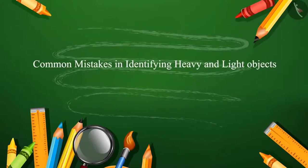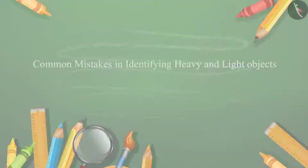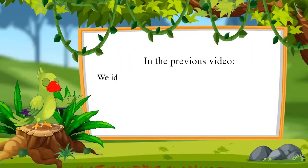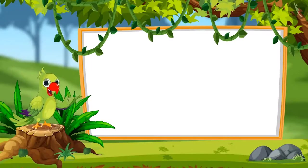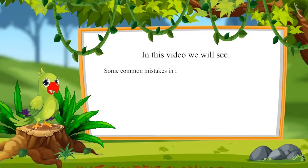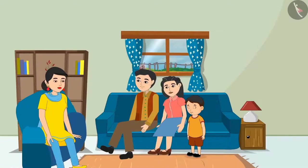Common mistakes in identifying heavy and light objects. Today, Chotu's uncle and aunt have come to his house. Along with them is their little child, Chinoo, with whom Chotu is going to have a lot of fun.